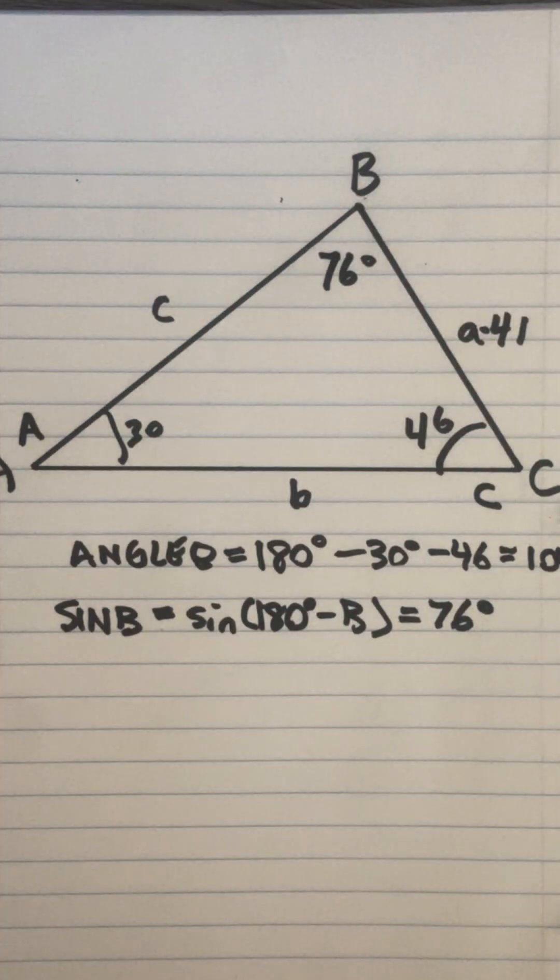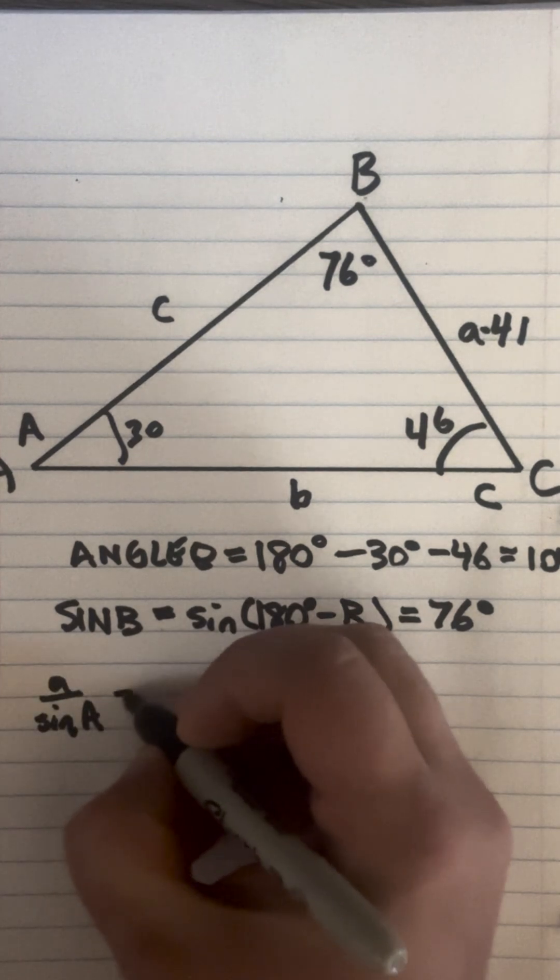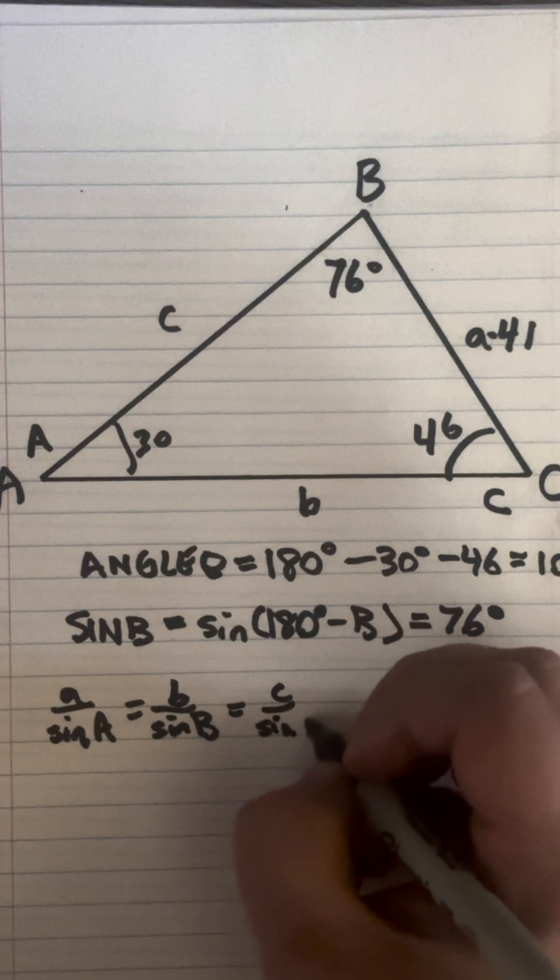So now using the law of sines we know that A is to sine A as B is to sine B as C is to sine C.